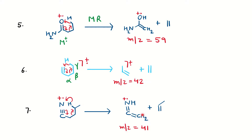C triple bond N (nitrile) also shows McLafferty rearrangement if you have gamma hydrogen. This terminal is fixed, so the mass is fixed here at m/z = 41. If your mass spectrum data has m/z = 41, you can assume your unknown molecule may have C≡N as a functional group and the fragment could be C≡N-CH₂. This is very helpful for identifying the structure of an unknown molecule or justifying a given peak.